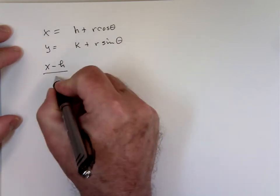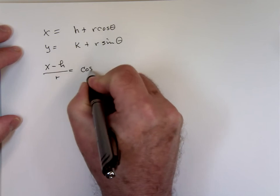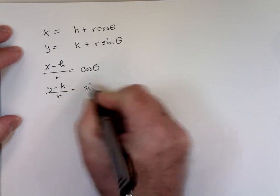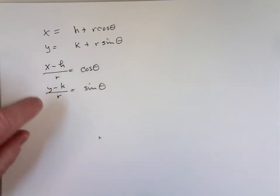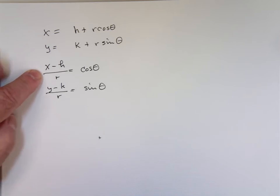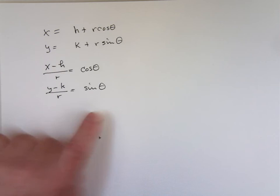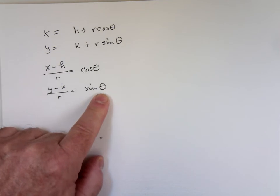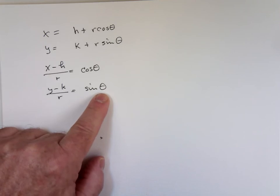Subtract H, divide by R. Now I'm going to do the same thing here — subtract K and divide by R. At this point you really have two choices: one is to actually solve for theta. Theta equals the inverse cosine of X minus H over R, and then substitute for theta in the Y equation — the inverse cosine of that expression — and you end up with the sine of the inverse cosine of that expression.